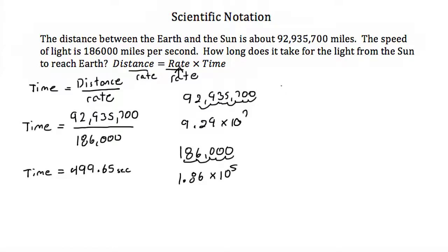Well then I can solve this. Time would be equal to 9.29 times 10 to the 7th over 1.86 times 10 to the 5th. And now to solve this, first I would do this in two steps.